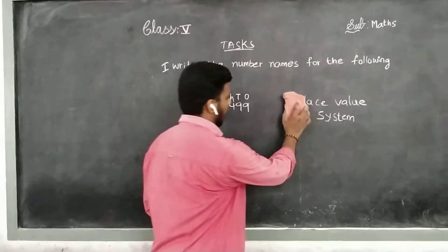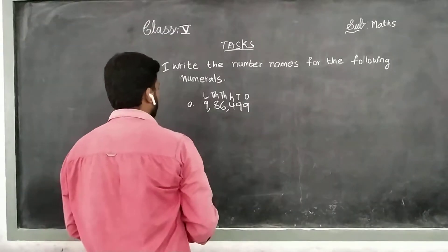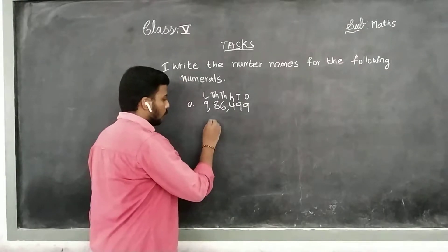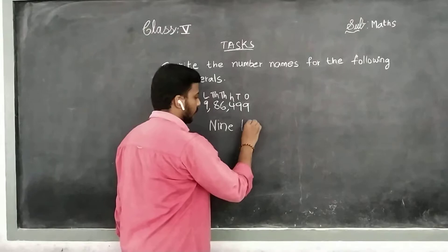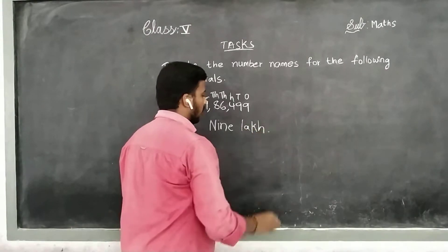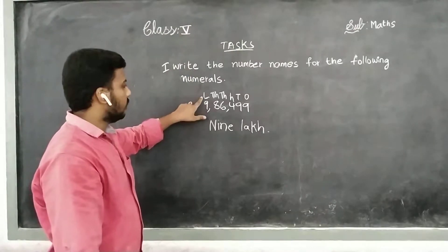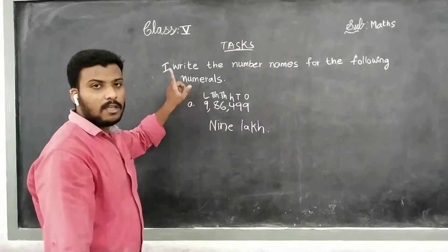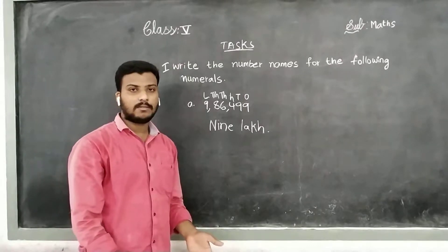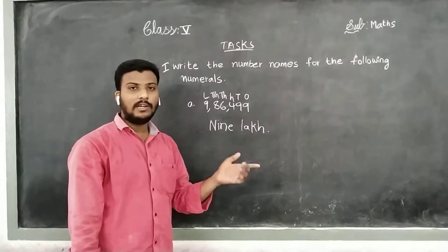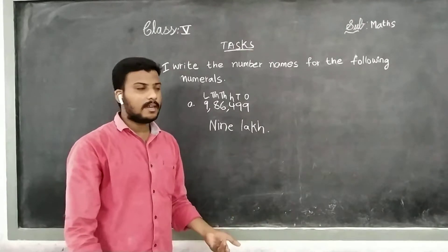So you will see the first one. In the place of lakhs, what is the value? In the place of lakhs, the value is 9. So 9 lakhs. How can we write 9 lakhs? Because there is 1 lakh. 1 lakh into 9 — how much? 9 lakhs. 1 lakh into 9: 1 into 9 is 9. So 1 lakh into 9 equals 9 lakhs.